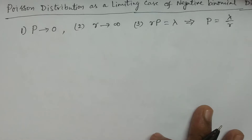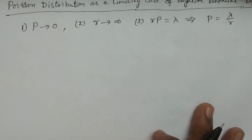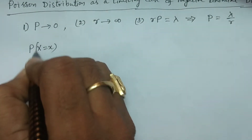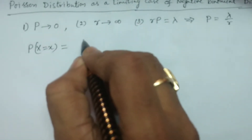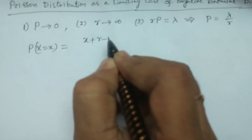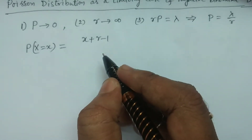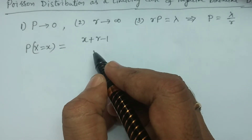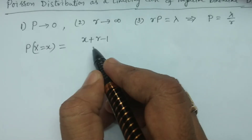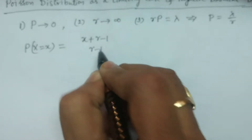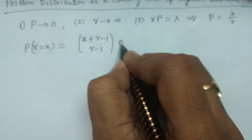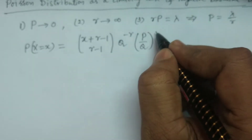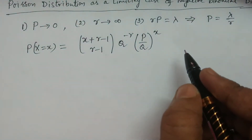Now we consider the probability mass function of negative binomial distribution. The probability mass function P(X = x) of the negative binomial distribution — there are many forms, and in this particular case we get many formulas — is: (x + r − 1) C (r − 1), multiplied by q to the power minus r, multiplied by (p/q) to the power x.